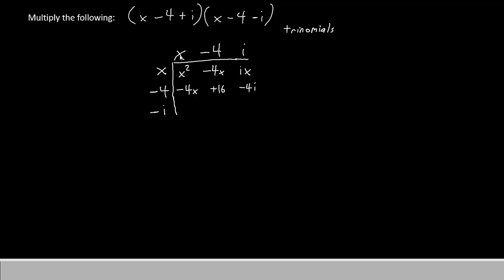Negative i times x gives negative ix. And negative i times negative 4 gives positive 4i. And negative i times positive i gives us two i's, so we'll say negative i squared.